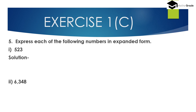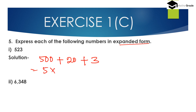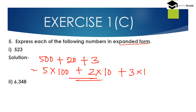Question number 5: express each of the following numbers in expanded form. First: 523. The expanded form of 523 is 5 × 100 + 2 × 10 + 3 × 1, that is 500 + 20 + 3. This is the expanded form of the number 523.